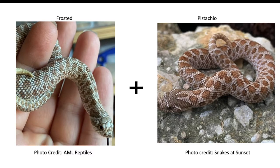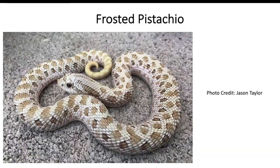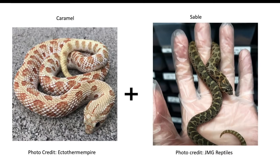Our next combination goes back to the frosted — caramel hypo — and combines it with a newer recessive gene called the pistachio. When you do this combination you get a frosted pistachio, a very cool and unique-looking snake.